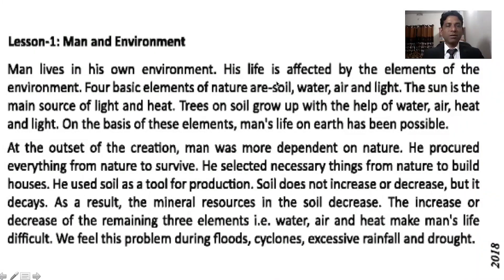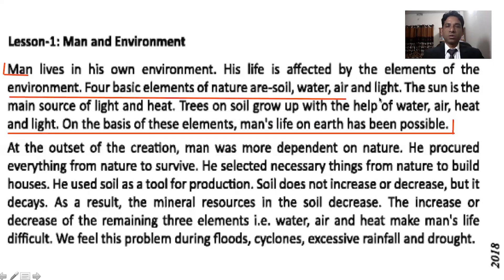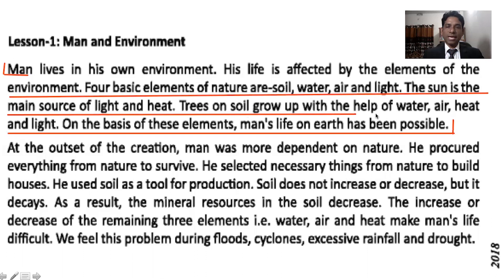Lesson 1 is Man and Environment. Man lives in his own environment and his life is affected by the elements of the environment. The four basic elements of nature are soil, water, air, and light. The sun is the main source of light and heat. Trees on soil grow up with the help of water, air, heat, and light. On the basis of these elements, man's life on earth has been possible. Trees give us food, oxygen, and fruits — without trees, human beings would not be possible in this world.